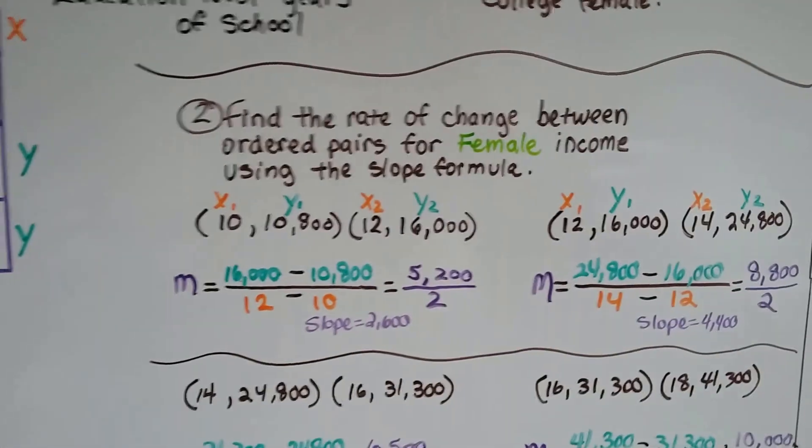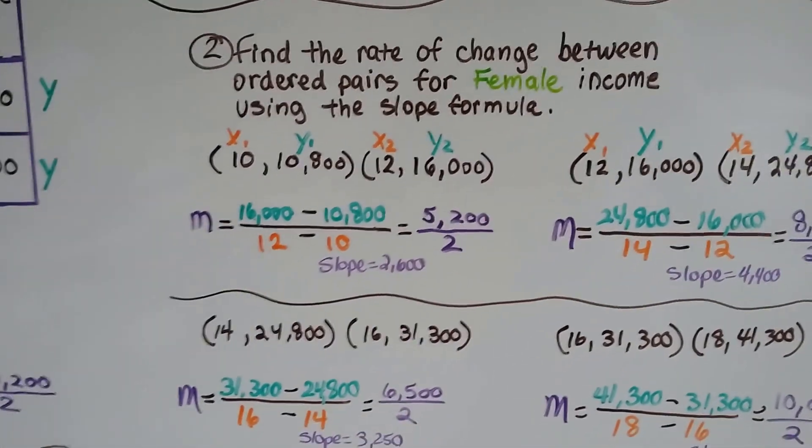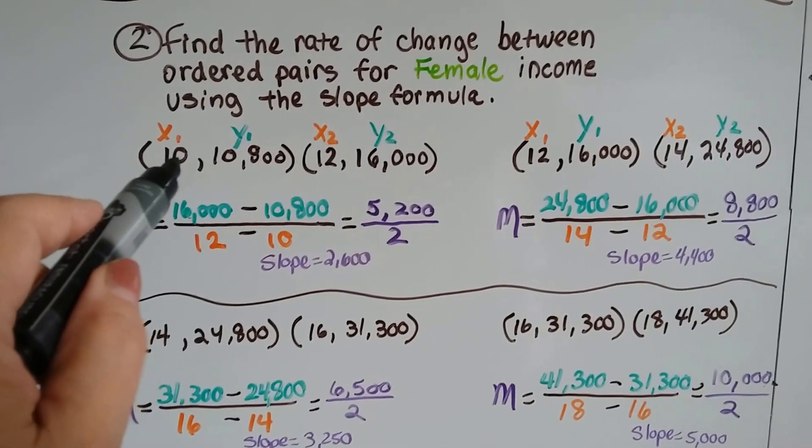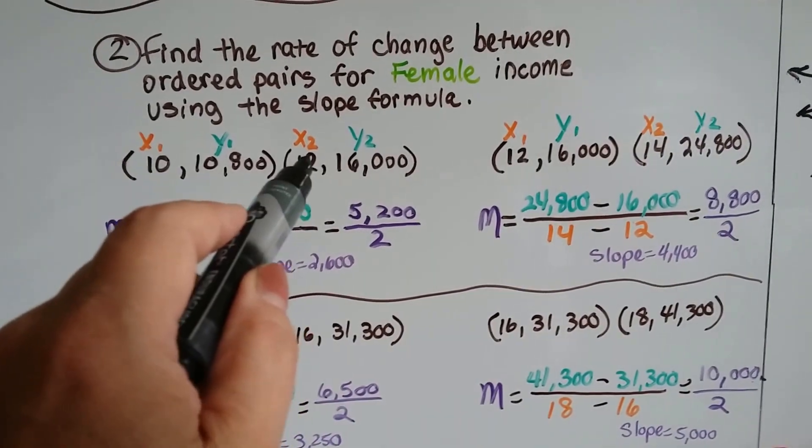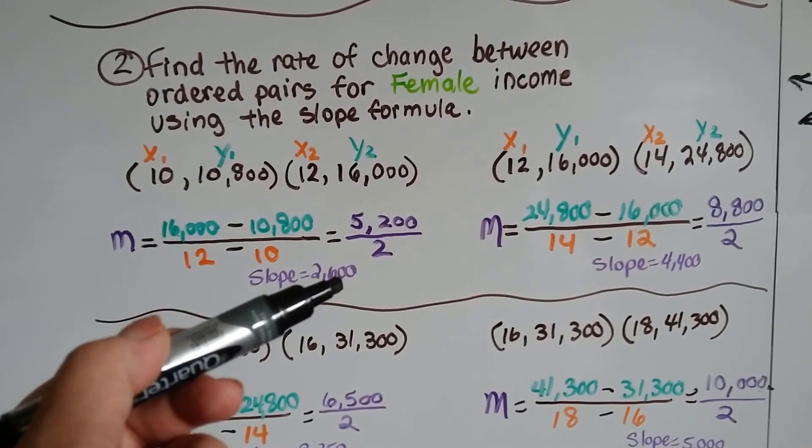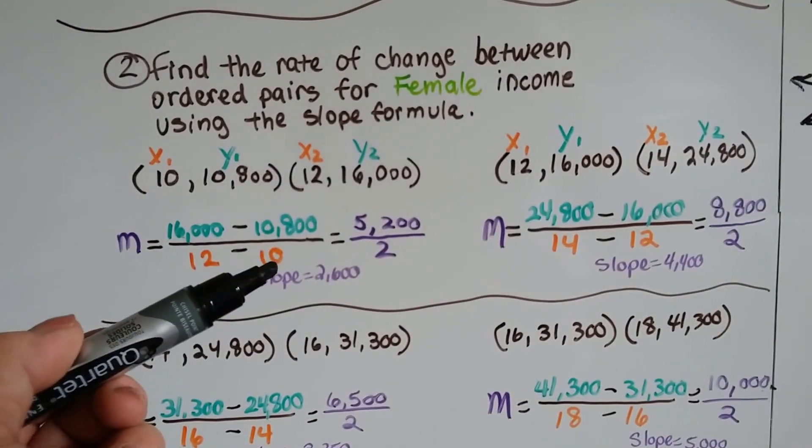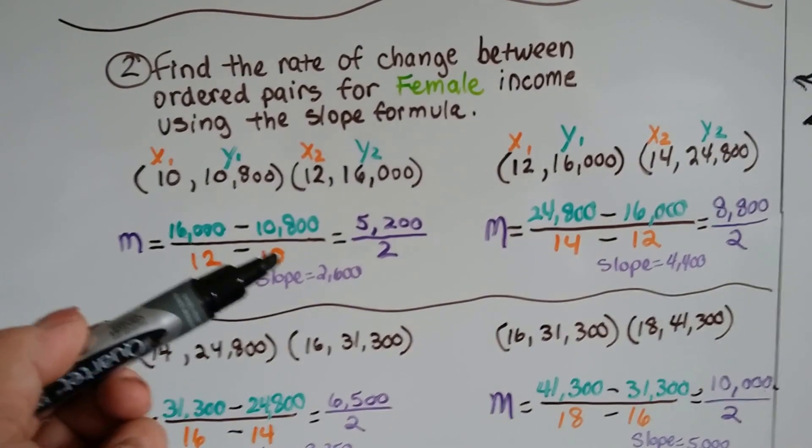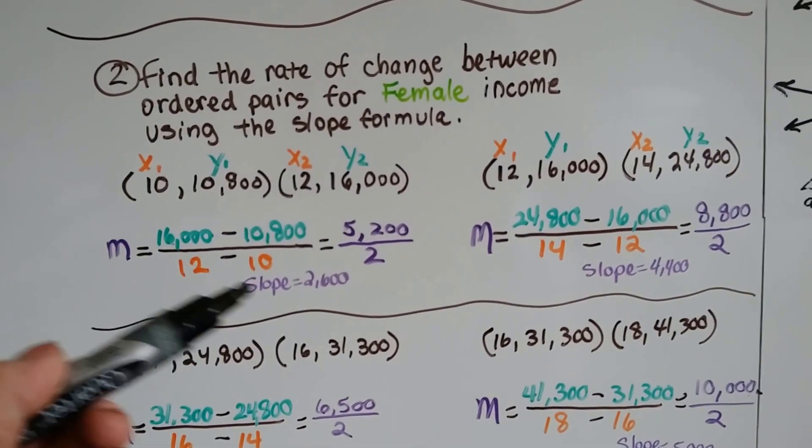Now, we find the rate of change between the ordered pairs for female income using the slope formula. We compare 10 years of school, sophomore in high school, compared to a high school graduate, and she'll make about $2,600 a year more for every year longer she's in school between her sophomore year and high school graduate.